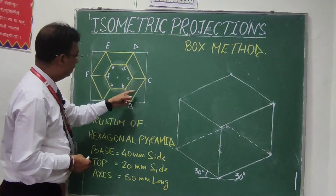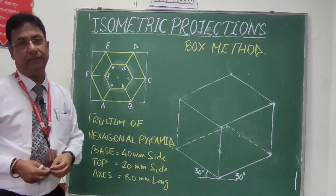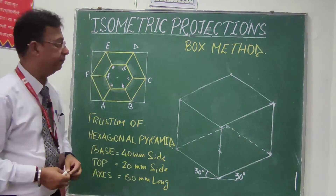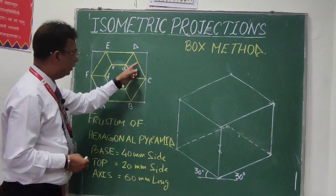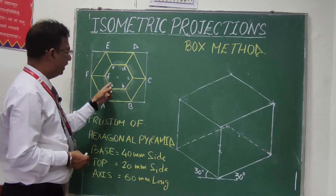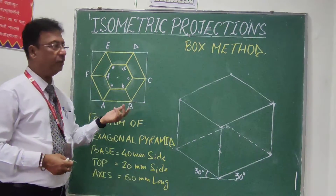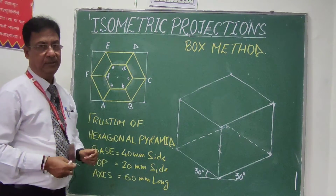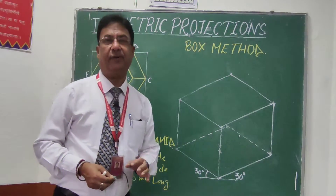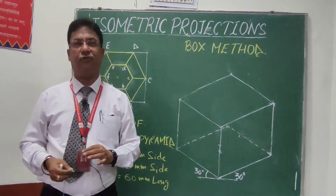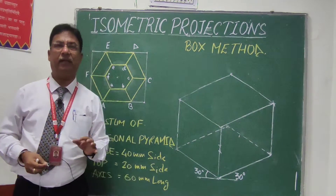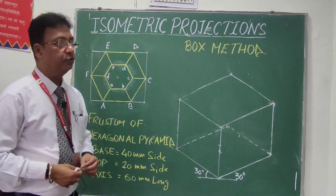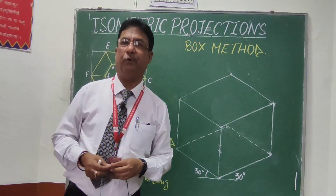Here I have drawn the top view of the frustum of the hexagonal pyramid. The bigger hexagon is 40mm side, and inside it there is another small hexagon that is 20mm side, and these are the slant edges. I have drawn only the top view, not the front view, because for drawing the isometric projection we don't need the front view. The height is given as 60mm.